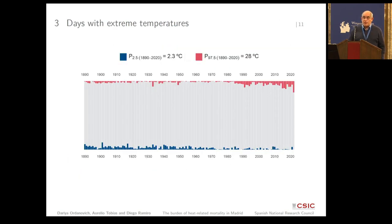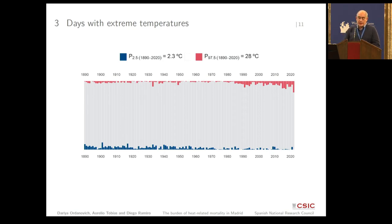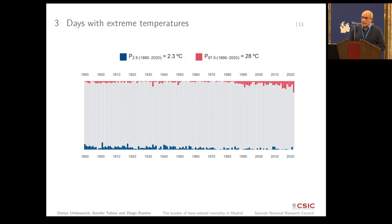As a consequence of this rightward shift of the temperature distribution, what we are getting is more days over an average temperature of 28 degrees and fewer days below 2.3 degrees throughout this time.